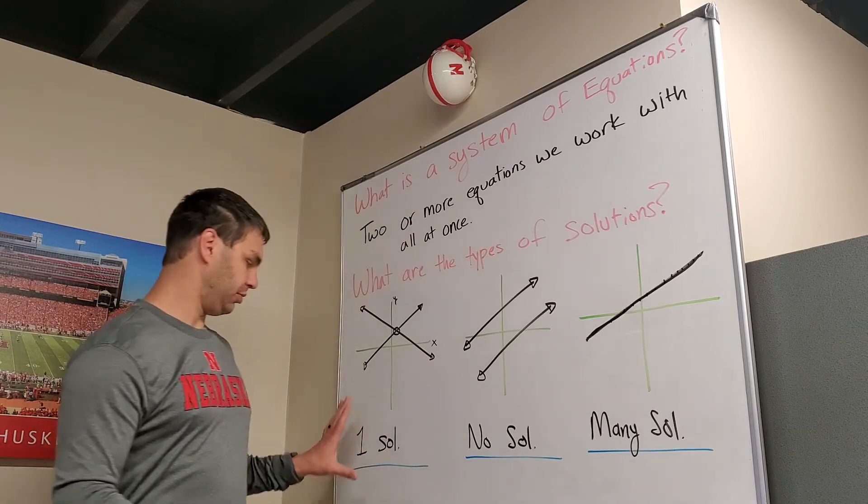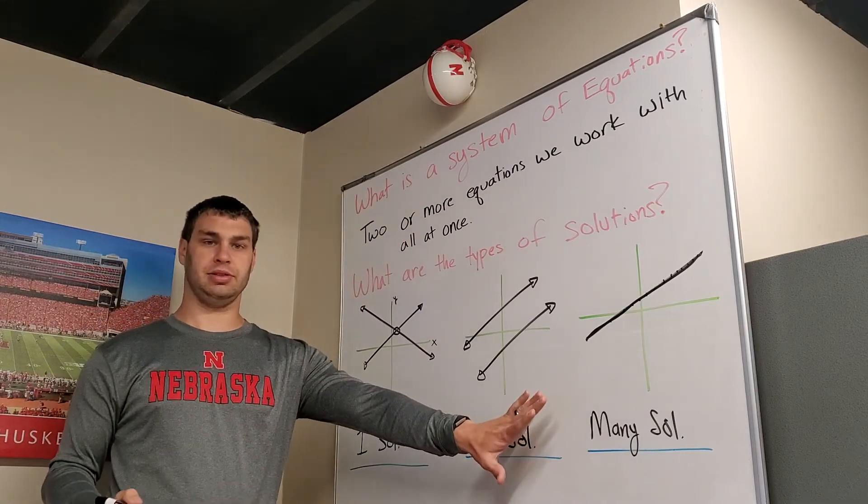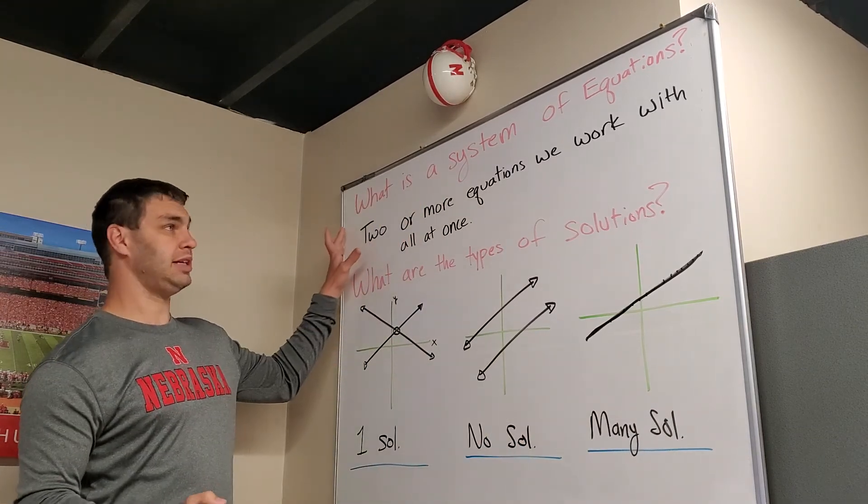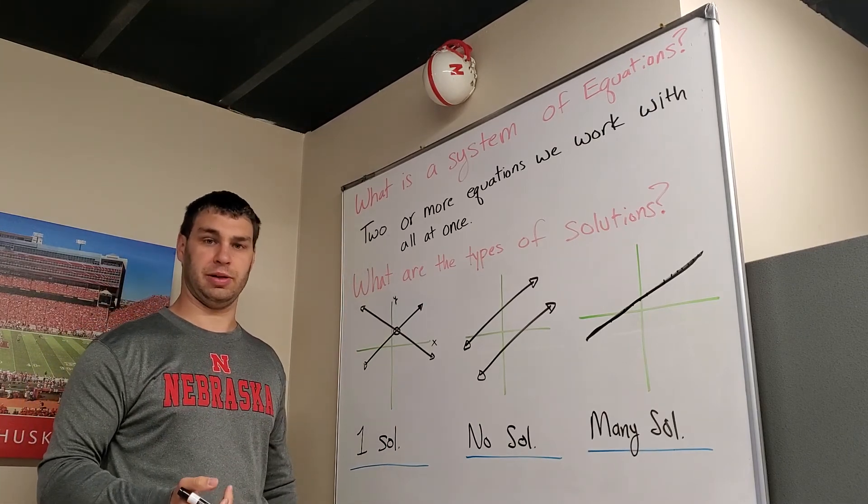So our three types are one solution, no solution, and many solutions, and the definition is just there's more than one equation that we're working with.